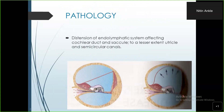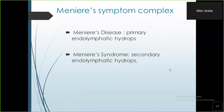This causes bulging of the Reissner's membrane, which will ultimately rupture. In this photograph, the arrow points to the normal structures, whereas in Meniere's disease the Reissner's membrane is totally bulged because the scala media is full of endolymph under pressure. At one point it ruptures and initiates the attack. Meniere's disease is purely idiopathic endolymphatic hydrops, whereas Meniere's syndrome is secondary endolymphatic hydrops.